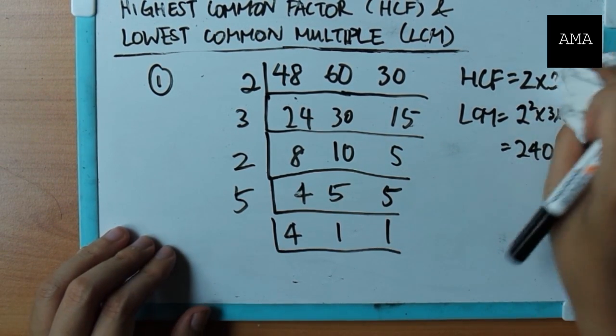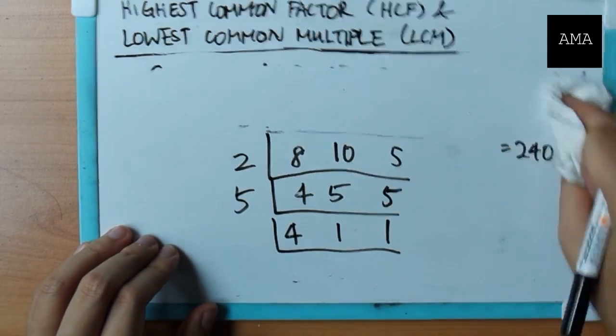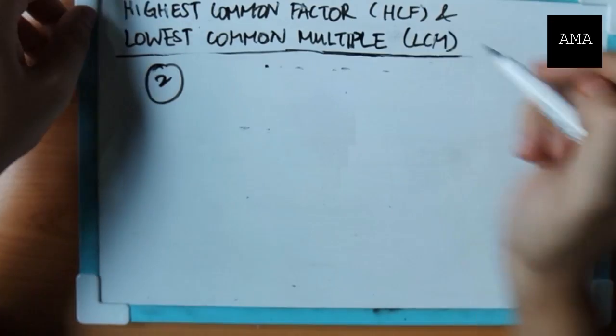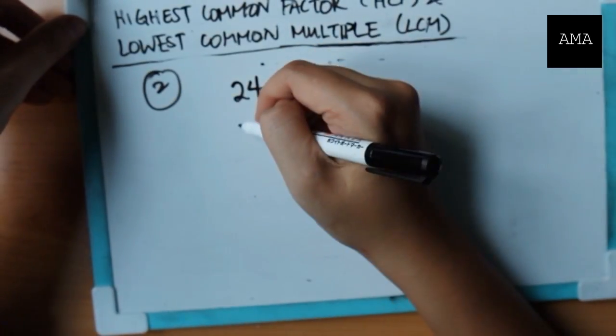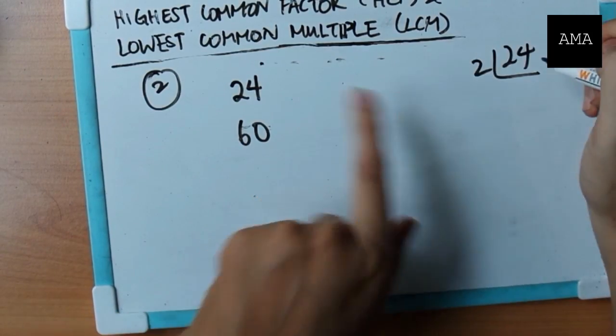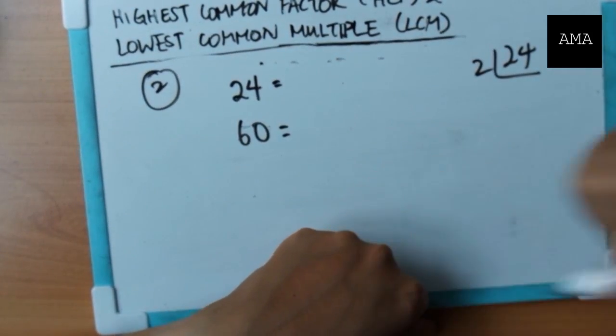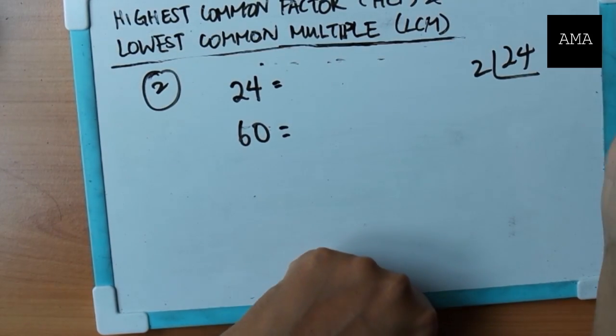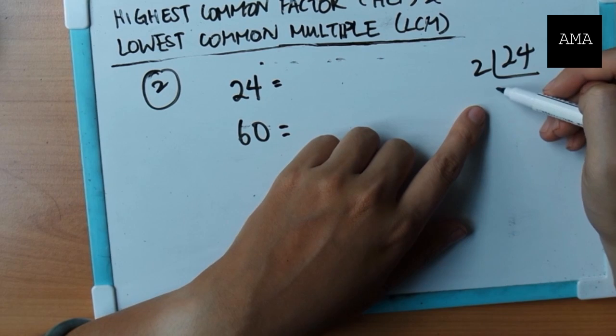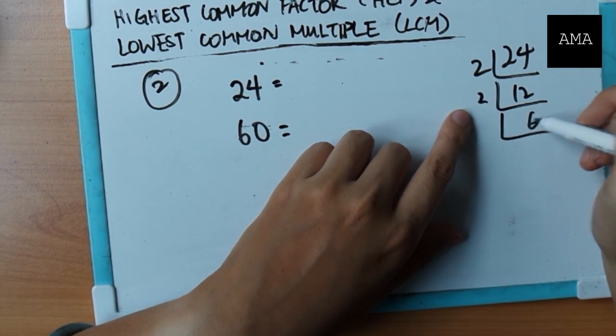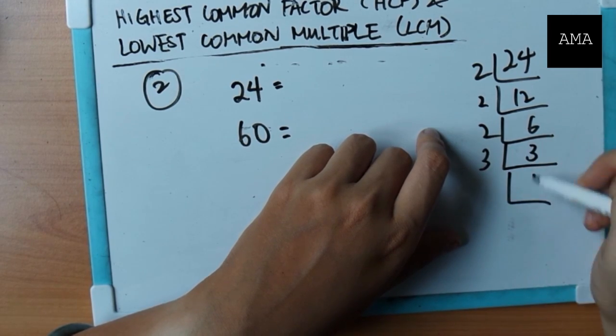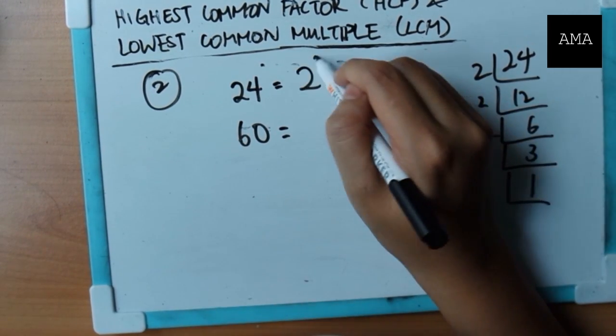The second method is similar. Now, let's say I have 24 and 60. So 24, you just express in index notation, also known as product of prime factors. So to find that, you just do this thing again, but for one number only. So 12 divided by 2 again, I guess 6 divided by 2 again. So I'm done. So 24 is 2 cubed times 3.